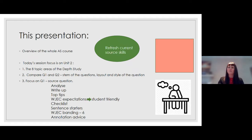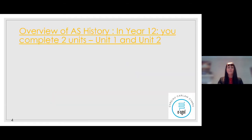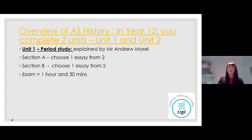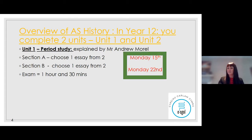I'm hoping to refresh the source skills you already have and give you some new ideas on how to evaluate sources. To begin, let's have a quick look at the overview of the AS History course as a whole. In Year 12 you will complete two units — Unit One and Unit Two. Unit One is the period study, which will be explained by Mr Morrell. He'll be looking at Section A and Section B, where you choose one essay from two for each section, with an exam of one hour and 30 minutes. Those sessions will be on Monday the 15th and Monday the 22nd of March.